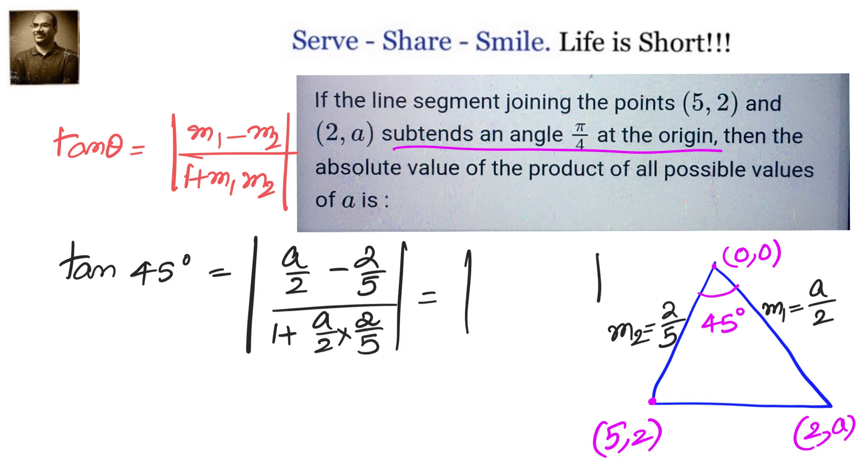Let us simplify that. We will have (5a minus 4) divided by (2a plus 10). Now, if you want to remove the absolute value, we have to consider both cases: one time plus and one time minus. So we have plus or minus 1 equals (5a minus 4) by (2a plus 10).